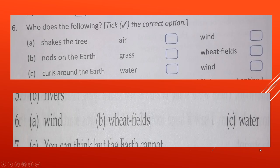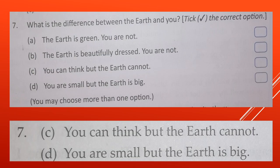Now see the next question. Next is, what is the difference between the earth and you? What is the difference between you and the earth? The earth is green, you are not. You have to choose the correct options. The earth is beautifully dressed, you are not. The earth is beautifully dressed, but what about you?